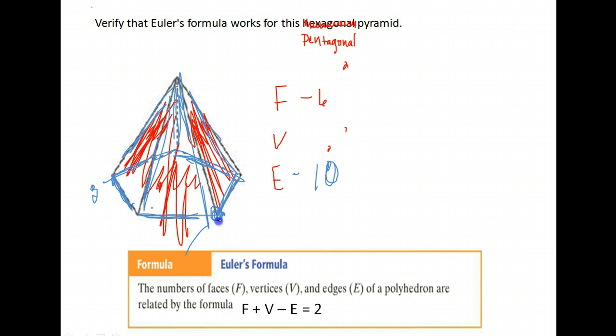And finally, vertices. Vertices are the corners where they come together. So there's one, two, three. There's one in the back here. Four, five, six. Let's try out our formula. We need to verify the formula. So the number of faces, six, plus the number of vertices, six, minus the number of edges, ten, should equal two. Does it? Well, six plus six is twelve, and twelve minus ten is two. Yes, it does. It works.